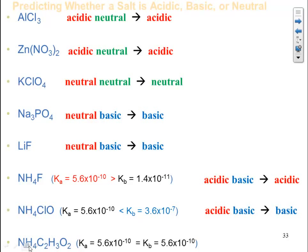For ammonium acetate: ammonium is an acidic cation. Acetate is not one of the memorized neutral anions, so it is basic. We again have acidic and basic components. But looking at Ka and Kb, they are exactly the same — meaning equal amounts of hydronium and hydroxide are formed. Therefore, ammonium acetate is a neutral salt in this particular example.